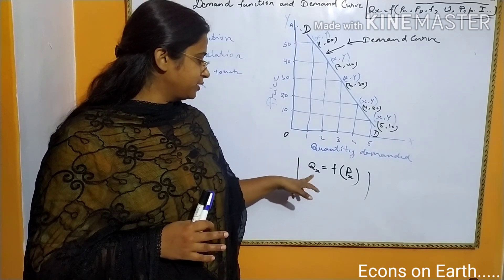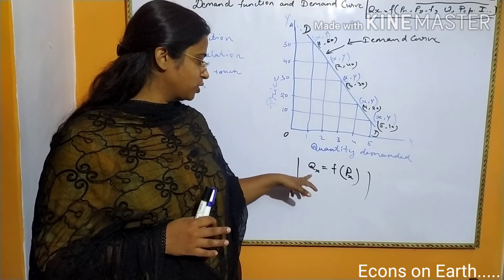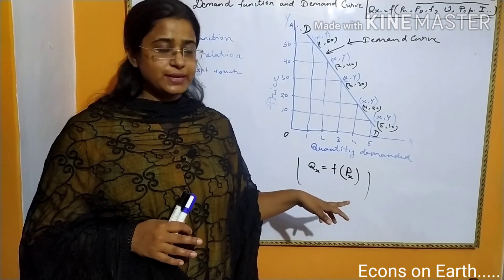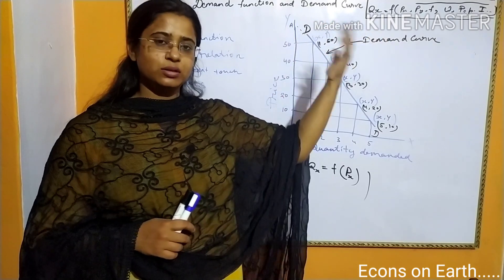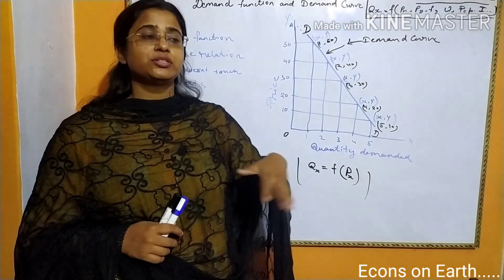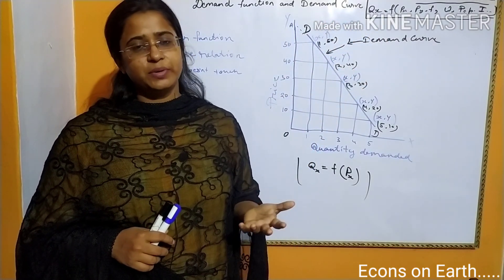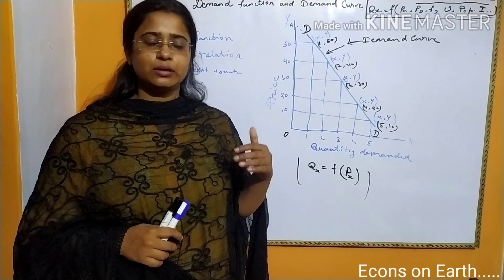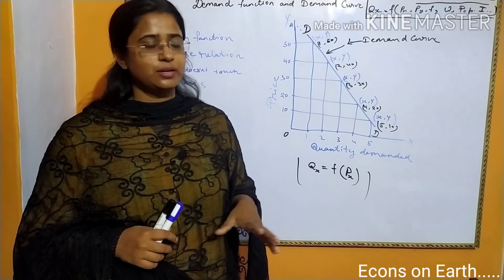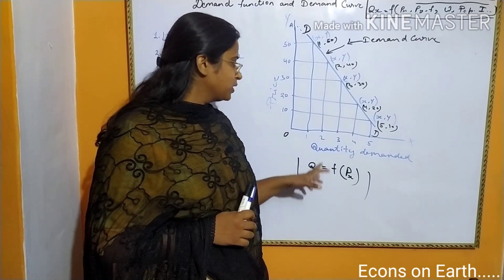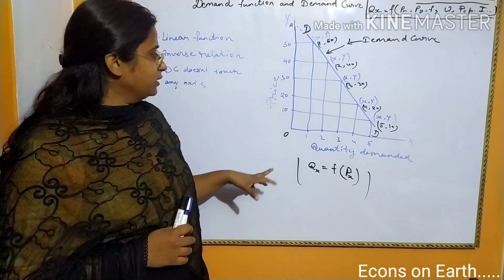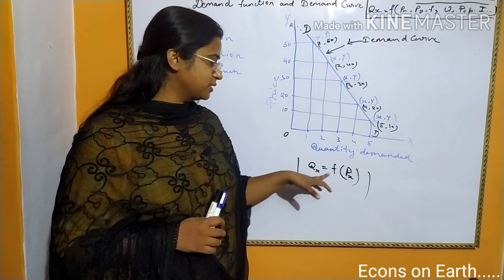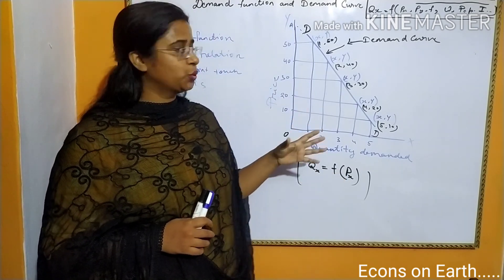So briefly we write this function as quantity of X is the function of price of X. We consider all other variables, which definitely have impact on determining the level of commodity X, as constant. We only take this price of X, and in this figure the relationship of quantity X and price of X is shown.